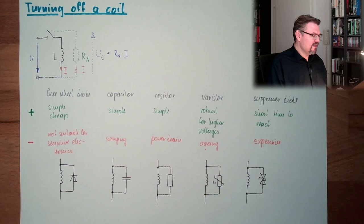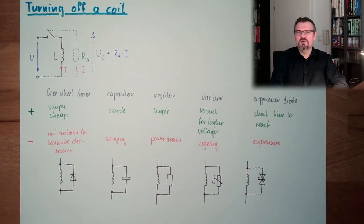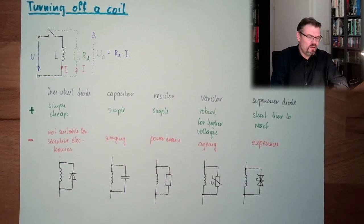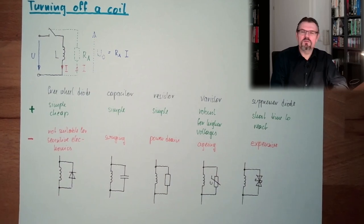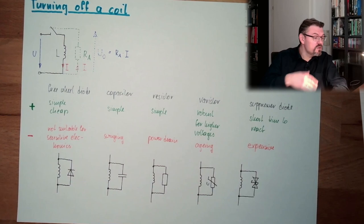All right? So this is how we can handle turning off a coil. With keeping the peak, the voltage peak, to a comfortable level. And actually, that's everything I want to tell you about magnetic fields and the usage of magnetic fields.